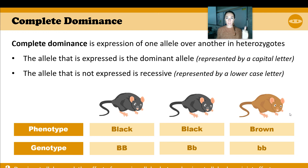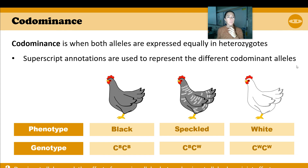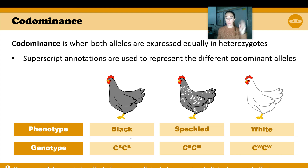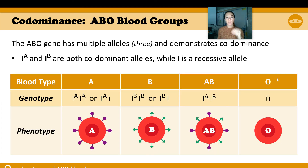Complete dominance: black and brown come together — black wins. You only see the brown if you have those two lowercase letters. Codominance is when they are both expressed. They're notated with a letter and then the alleles on it. So here's black, here's speckled, here's white. If I have a black and white allele both present, I will actually see both. If I just have the black allele, I see just black; if I just have white, I see just white. Codominant is when both are equally seen in full — it's not a type of blending.